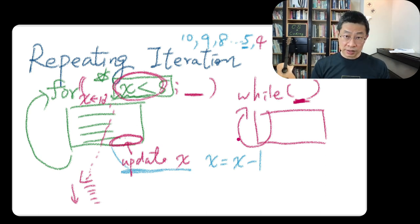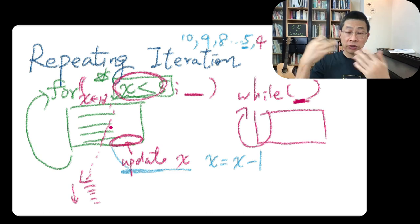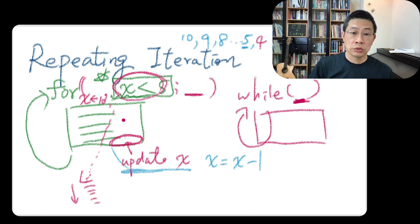In each statement, of course, inside of this, you can do anything. You can call another function. You can have another loop. If that's the case, we call it nesting, nested.